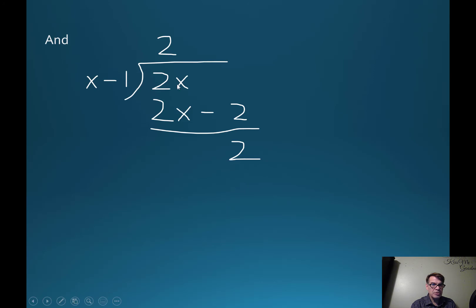So x minus 1 into 2x—how many times does x go into 2x? Two times. So 2 times x is 2x minus 2. This becomes a minus, this becomes a plus, and that cancels out, and we're left with 2. Now I can't go any further, so 2 is the remainder. Here it is, here's how it all breaks down.